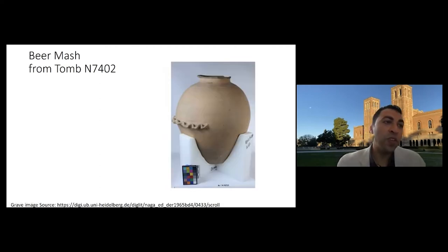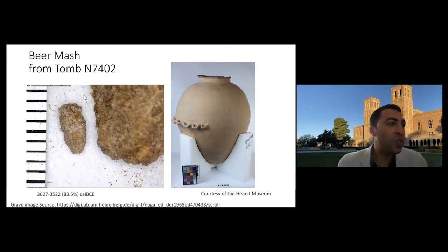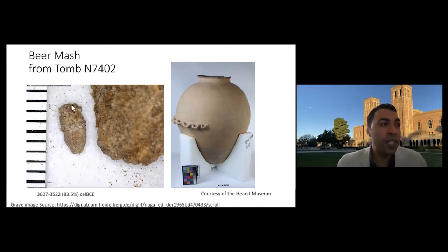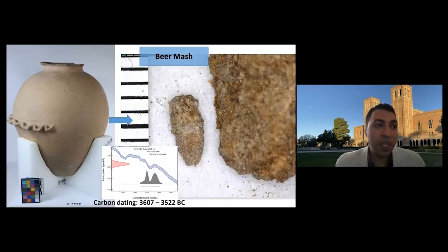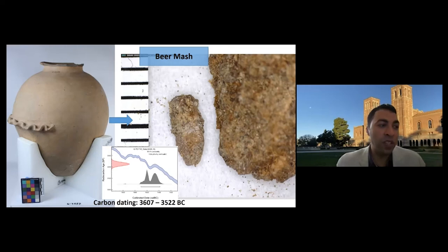After the jar came to the Hearst Museum of Anthropology at the University of California, Berkeley, I decided to research this sandy sediment. Surprisingly, after putting it under the microscope, I found a fragment of fermented barley — deformed from being buried for thousands of years and from the fermentation process of beer making. Carbon dating confirmed the date was around 3600 BC, making this over 5,000-year-old beer mash.